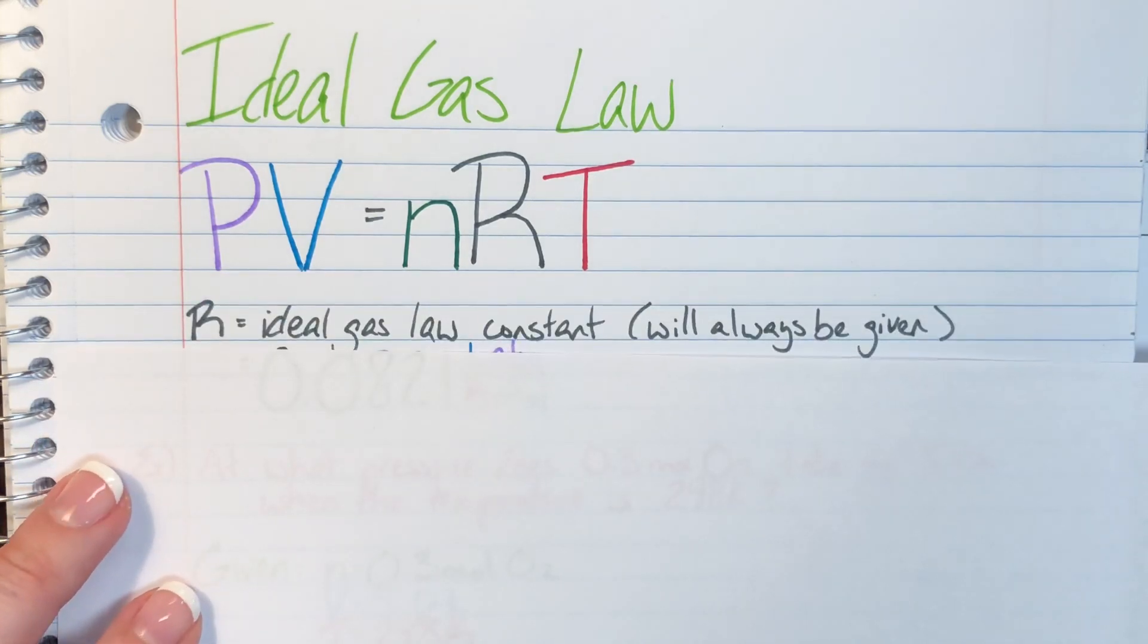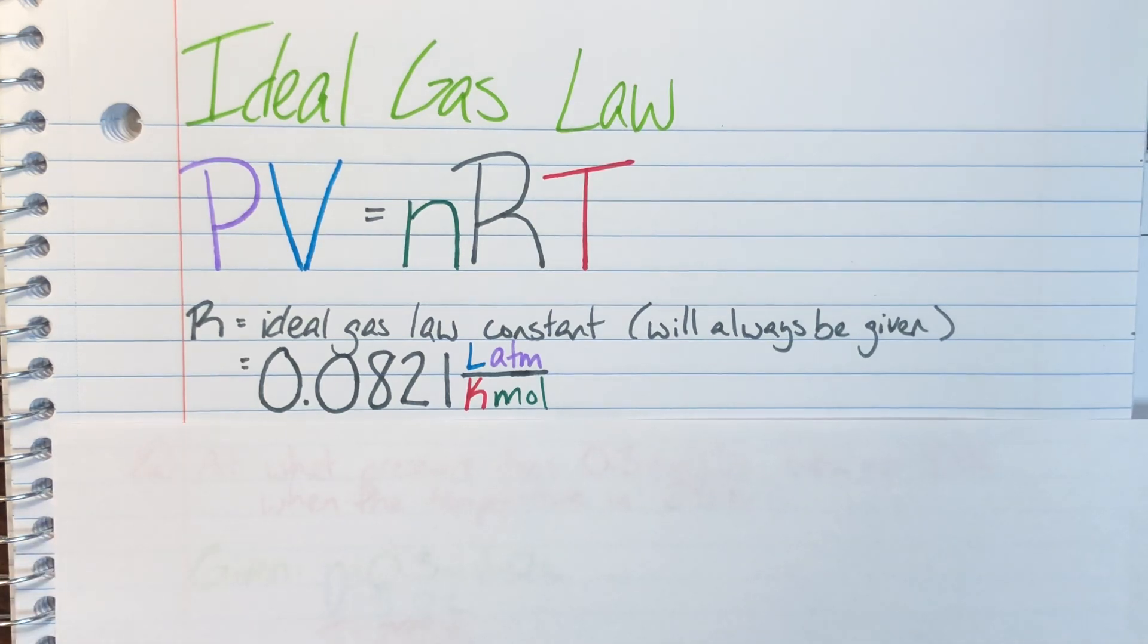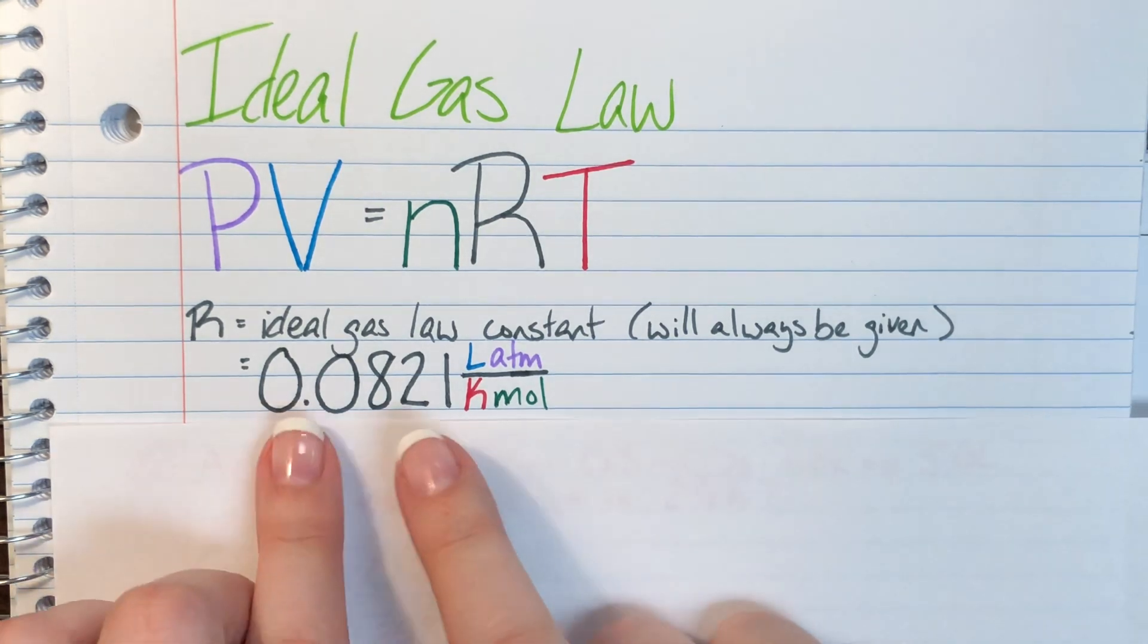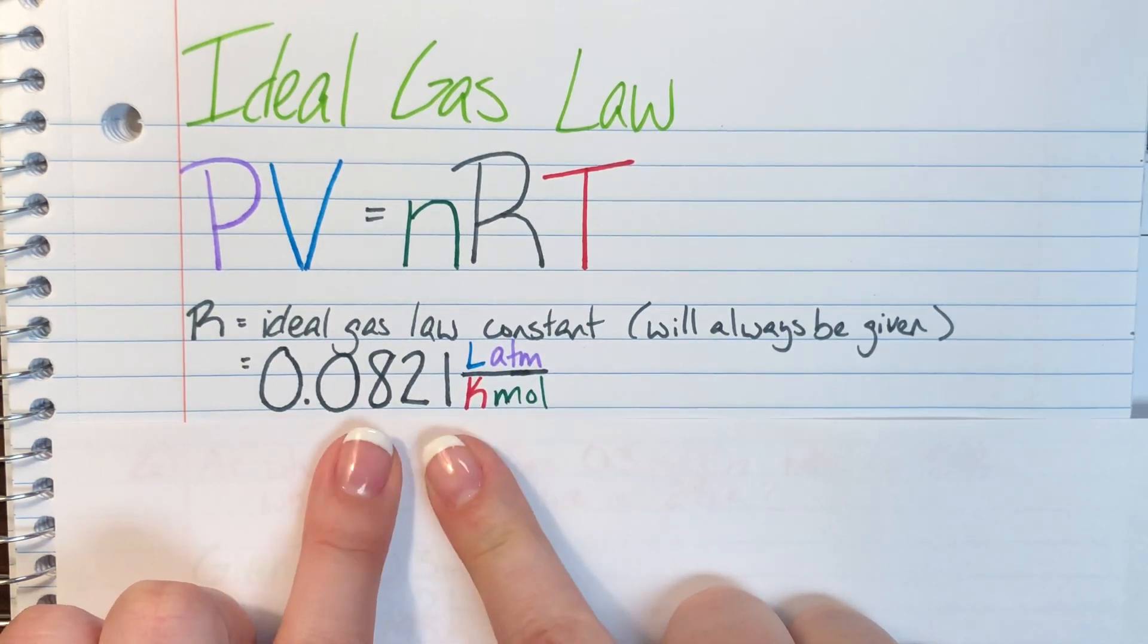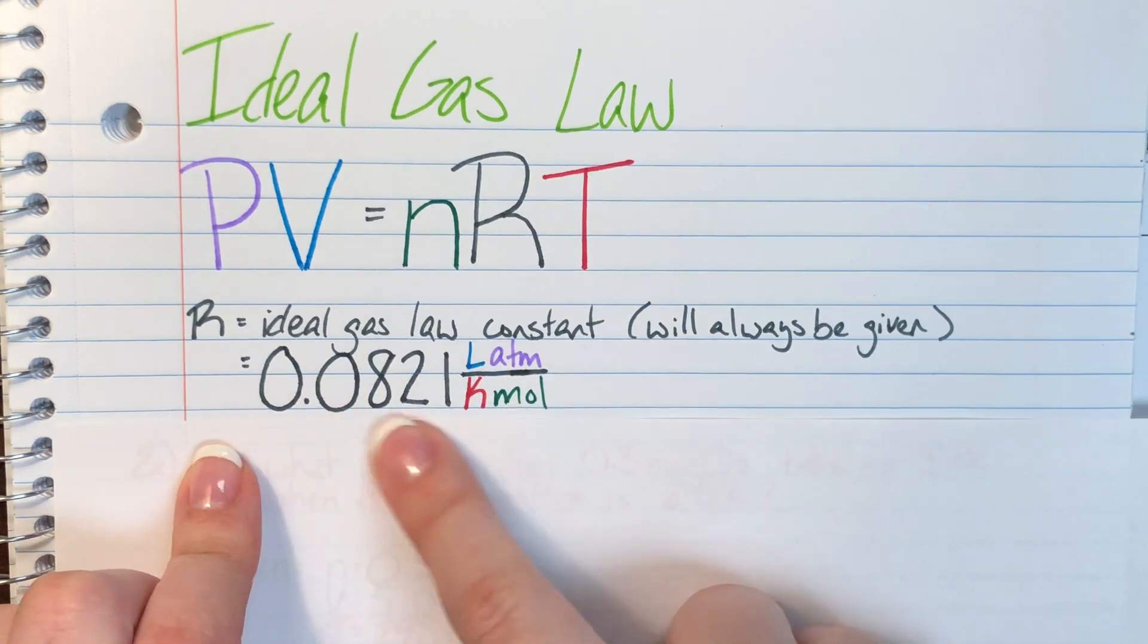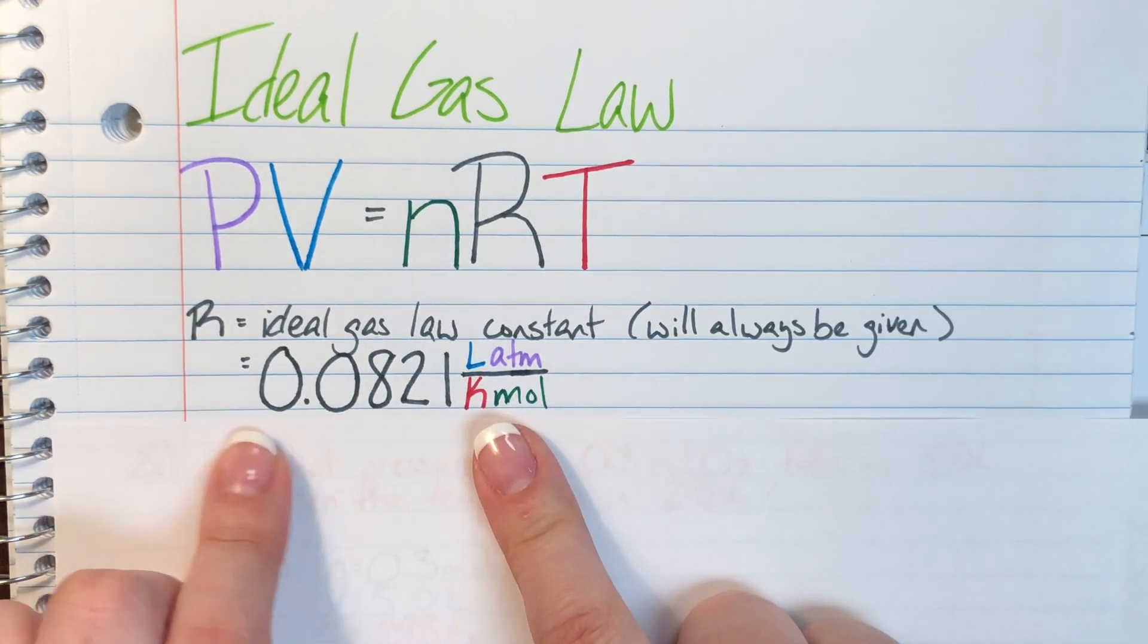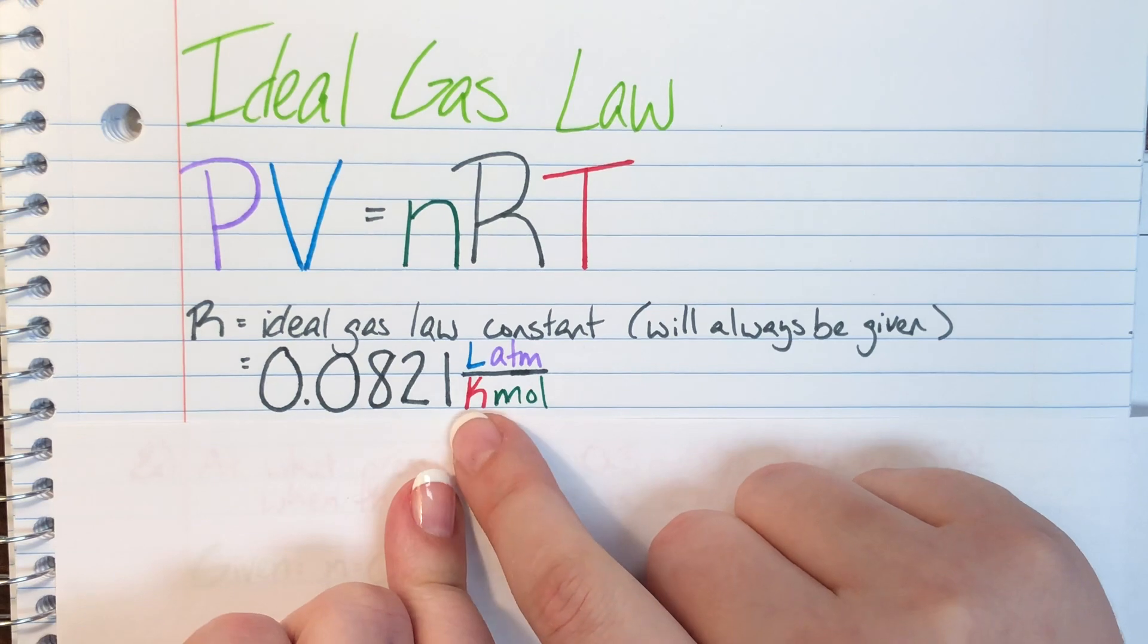The only new piece of information here is this capitalized R. R is going to be our ideal gas law constant, and R is always going to be given to you. It is within your periodic table that you have access to at all times. R, because it is a derived constant, has a lot of units inside of it. The R that we're using most commonly in this class is 0.0821 liter atmospheres per Kelvin mole.